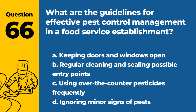Question 66. What are the guidelines for effective pest control management in a food service establishment? a. Keeping doors and windows open. b. Regular cleaning and sealing possible entry points. c. Using over-the-counter pesticides frequently. d. Ignoring minor signs of pests. Answer: b. Regular cleaning and sealing possible entry points. Effective pest control involves maintaining cleanliness and securing the establishment.